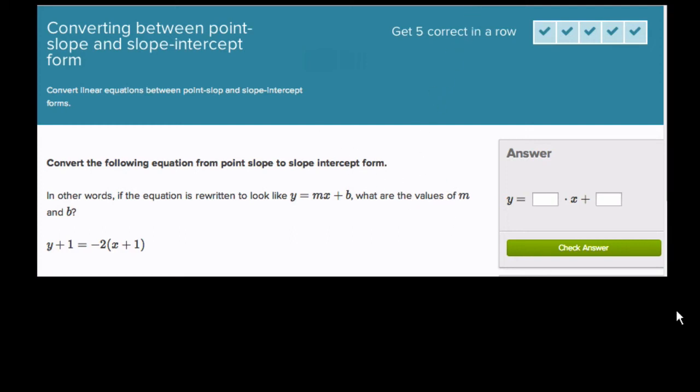Okay, so in this module, you're given something in either slope-intercept form or point-slope form and you need to convert it to the other form.